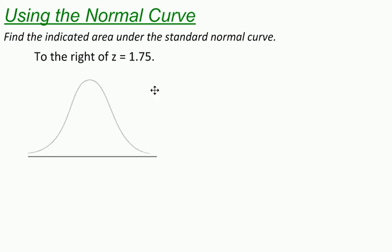Here's a quick example of how to find the area under a normal curve, and I'm looking at the area to the right of a z-score. So it says find the indicated area under the standard normal curve to the right of z equals 1.75.